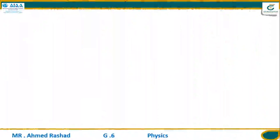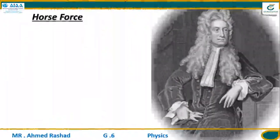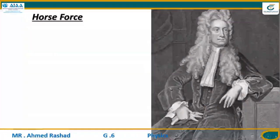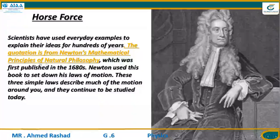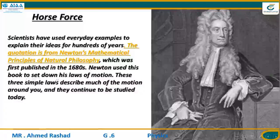Before beginning this lesson, this is a picture of Newton, who discovered the laws of motion — you can call him the father of classical physics. Many scientists used everyday examples to explain their ideas 400 years ago. Newton's equations were first published in his book 'Mathematical Principles of Natural Philosophy' in the 1680s, where he set down his laws of motion describing all motions for all objects.